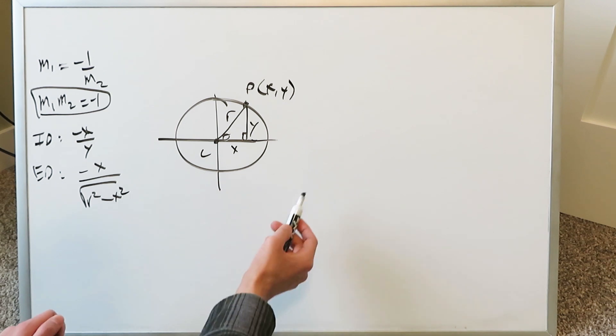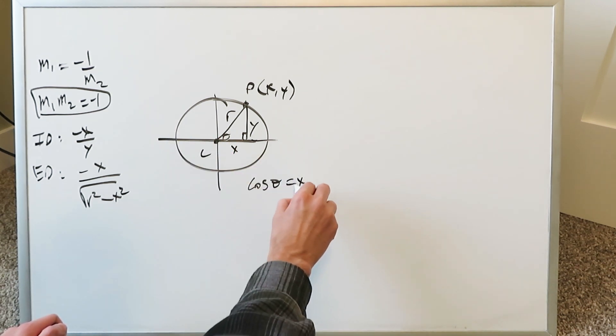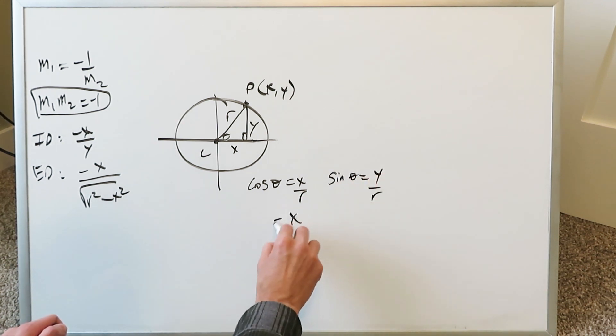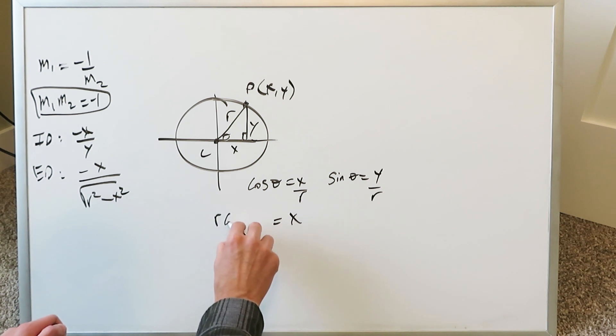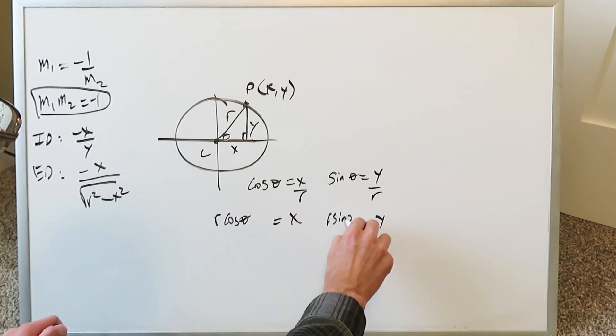You could very well get the values of this point x, y for p using trigonometry. Cosine theta, this angle theta, is equal to x over r. Sine theta is equal to y over r. Solve in each case for x and y. x is equal to r cosine theta. y is equal to r sine theta.